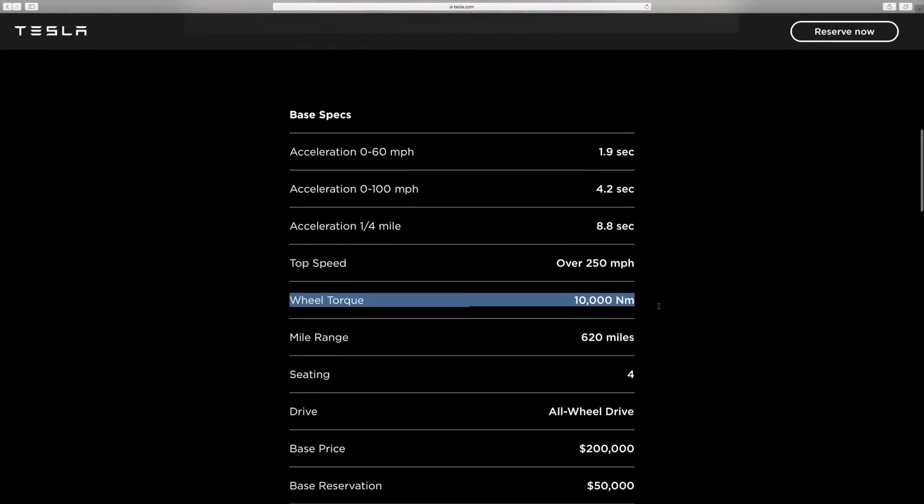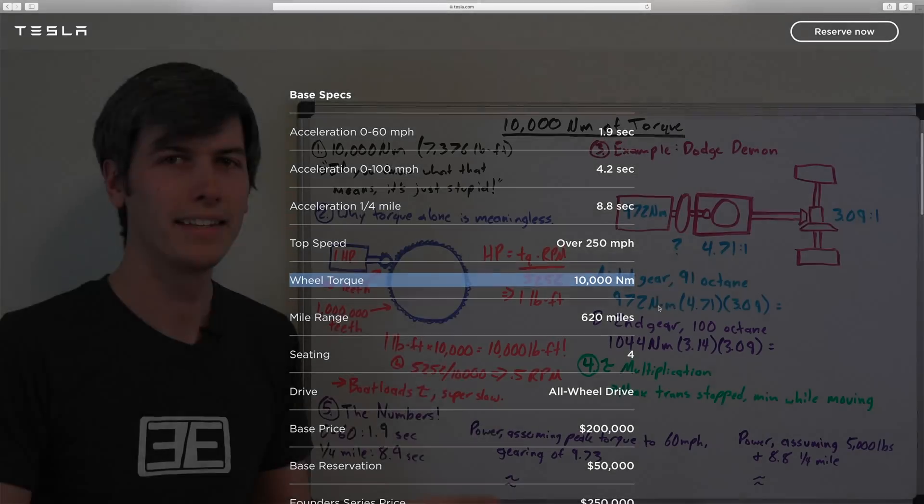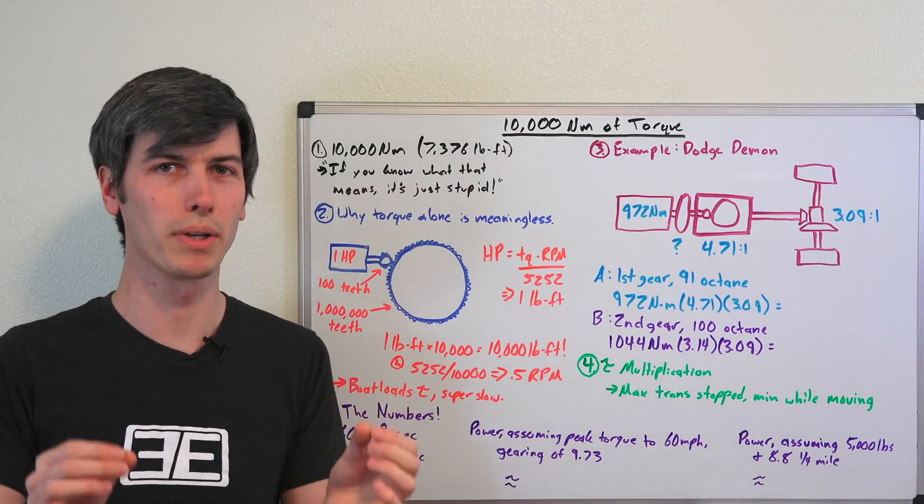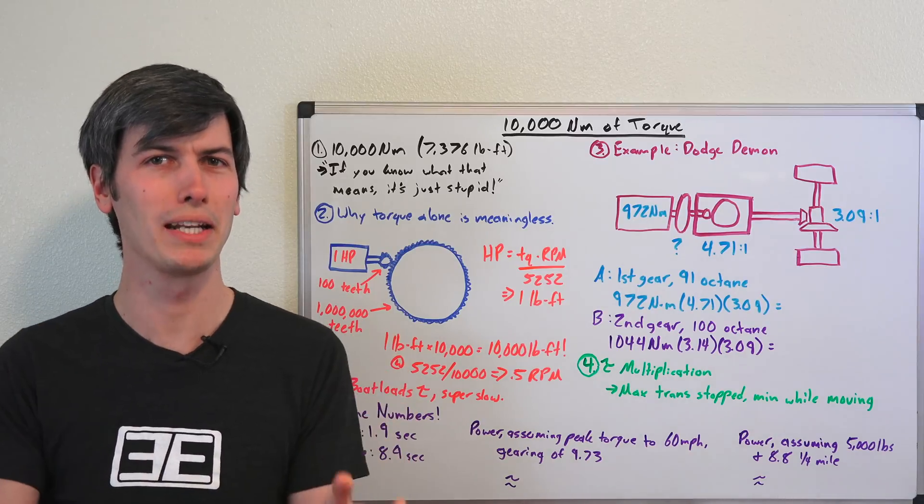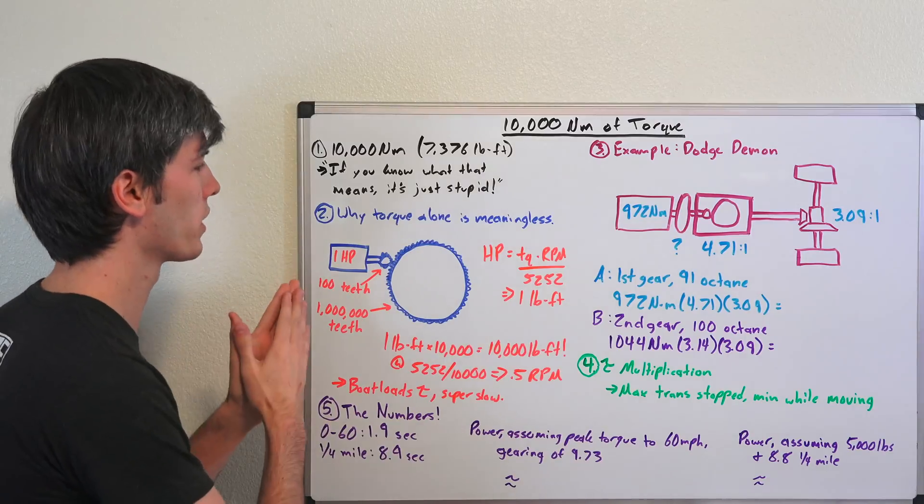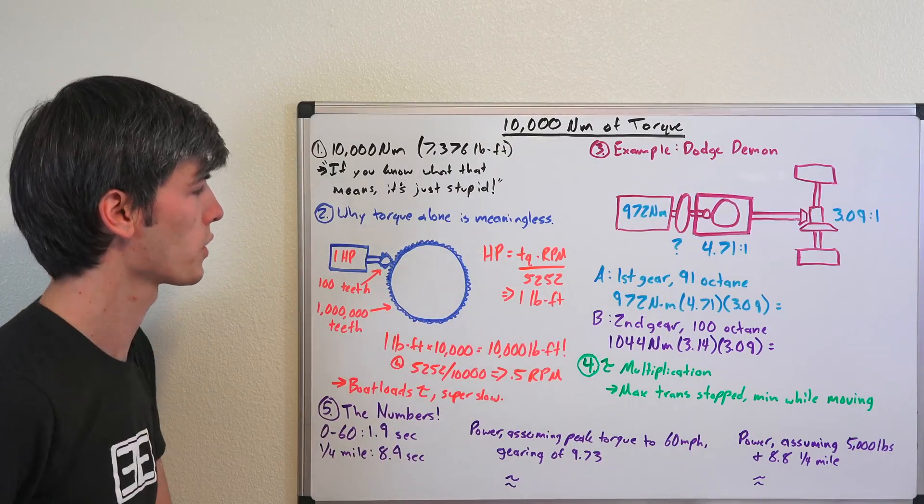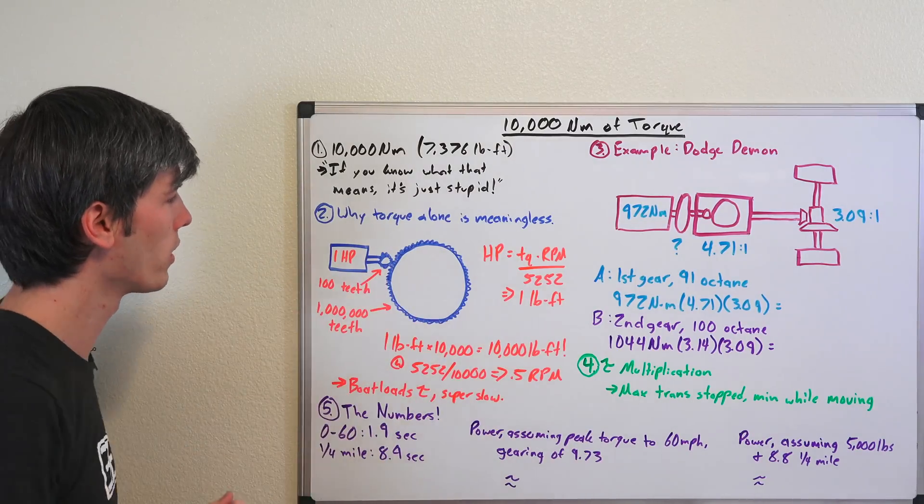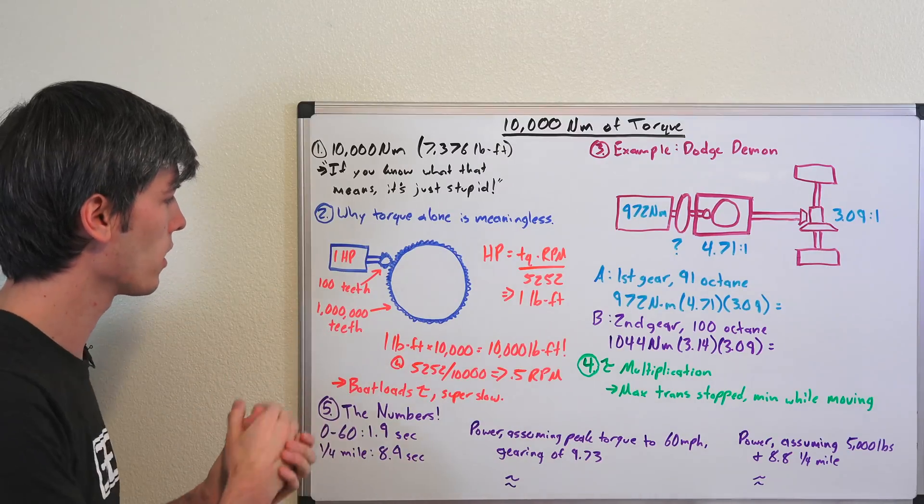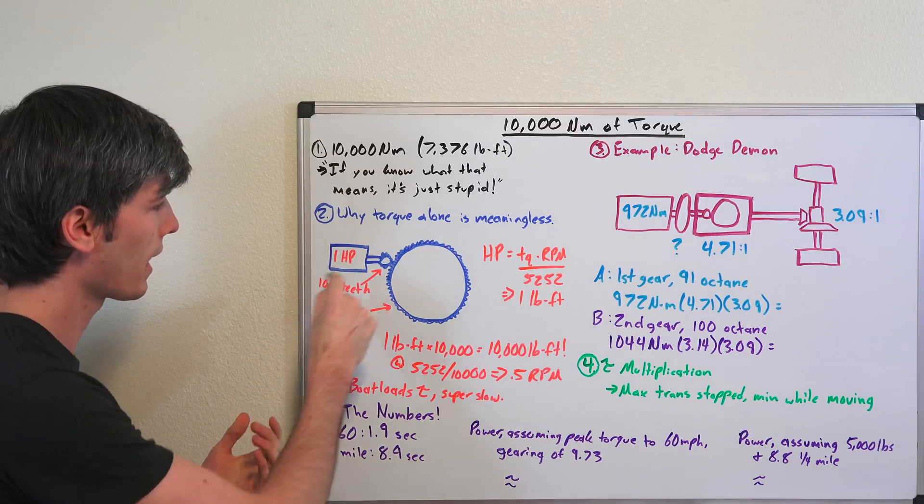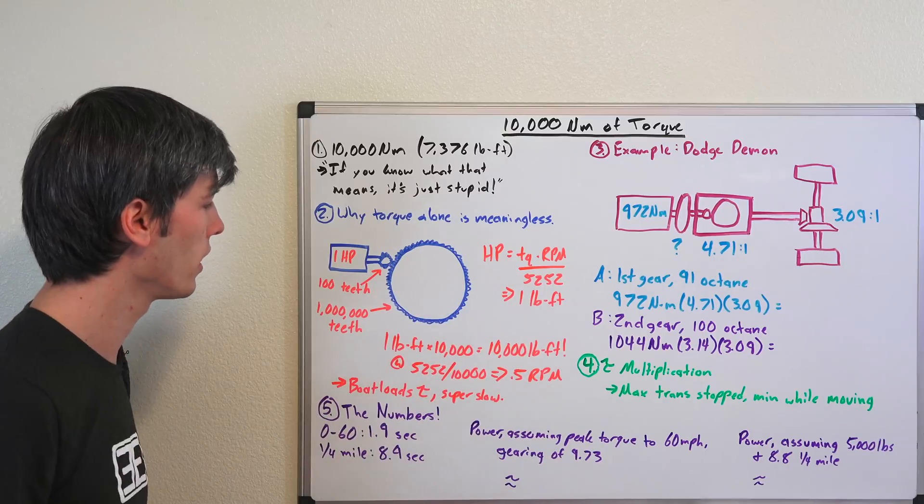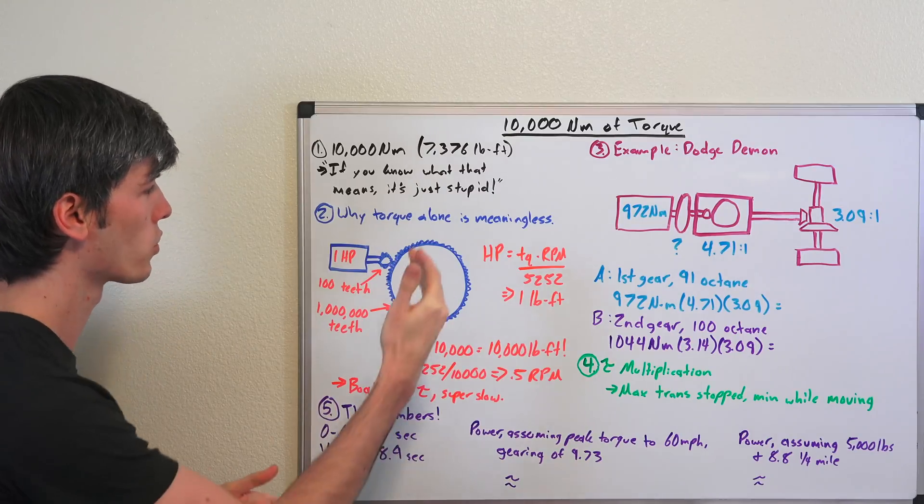But if you look at Tesla's website, it says 10,000 newton meters of wheel torque. Now this is a very important distinction because wheel torque alone is a pretty meaningless number to know and I'm going to demonstrate why here with a one horsepower electric motor. So we've got our one horsepower electric motor and it has a gear at the end of it with a hundred teeth,